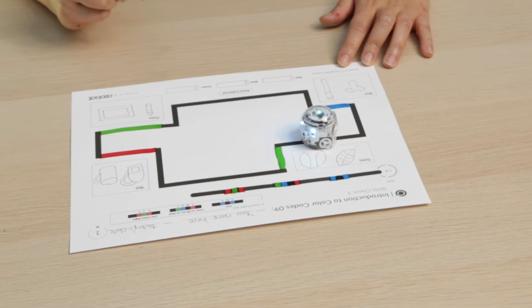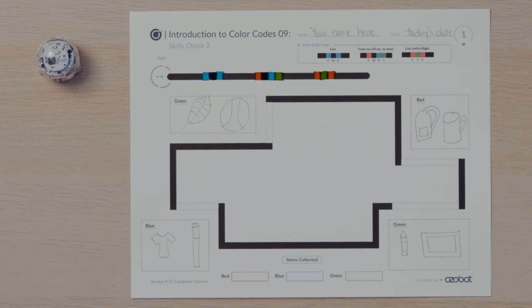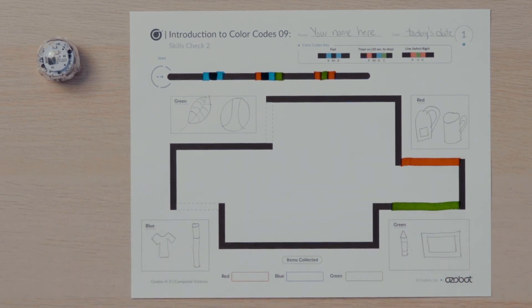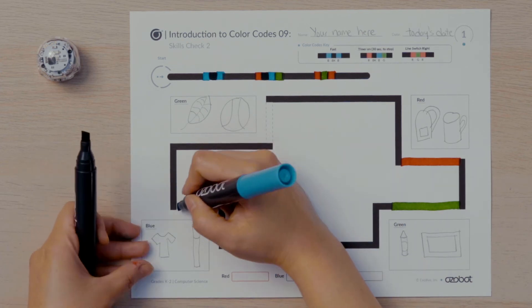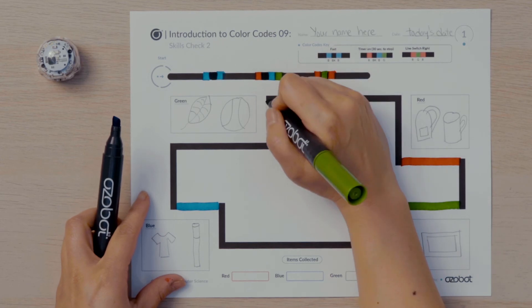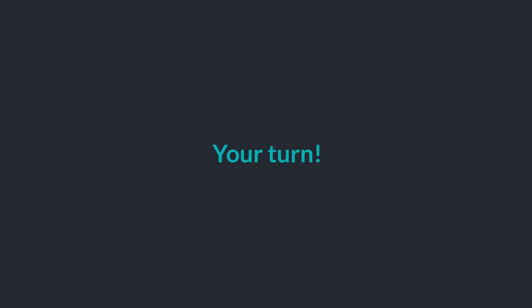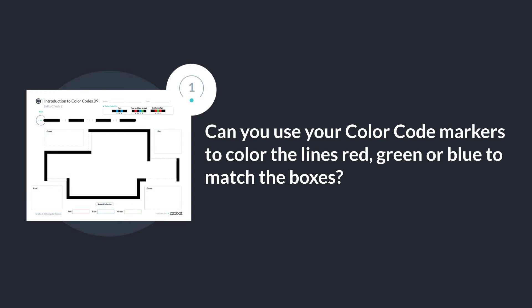Ozobot will use its LED light to show you the color of the items it collects on the scavenger hunt. Look at the path Ozobot will follow. Four lines are missing to complete the path. You will color the lines red, green, or blue to match the color of the items Ozobot collects. I will trace the line below the red box red, the line above the green box green, the line above the blue box blue, and the line next to the second green box green. Can you use your color code markers to color the lines red, green, or blue to match the boxes?